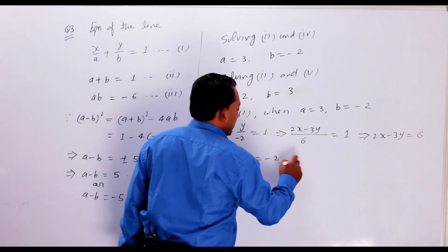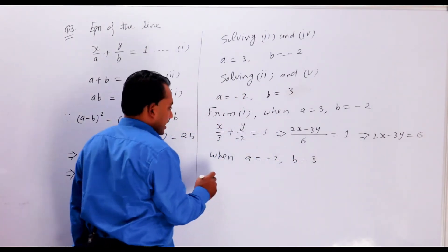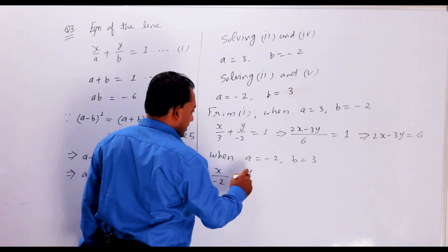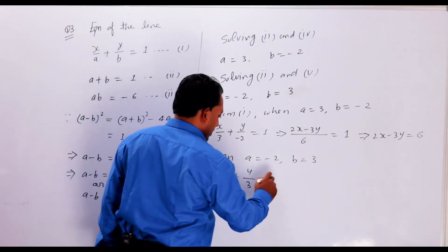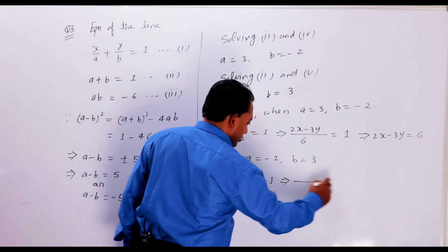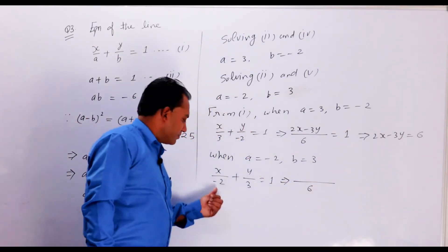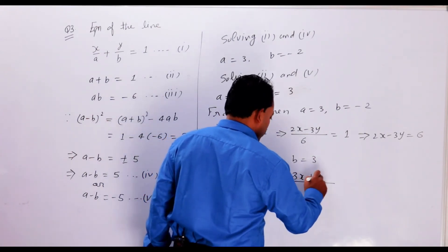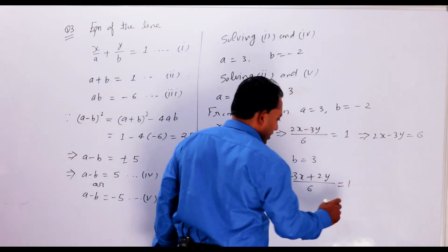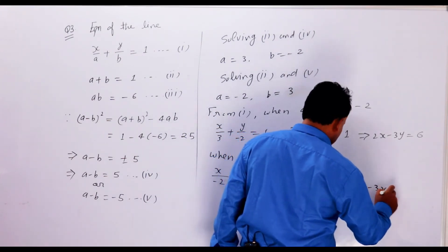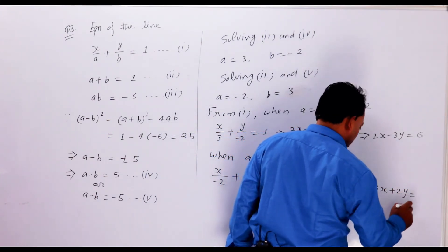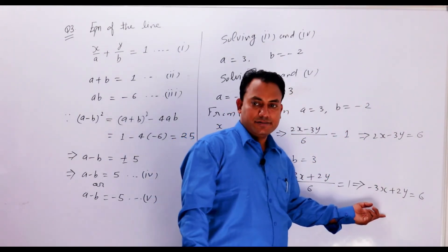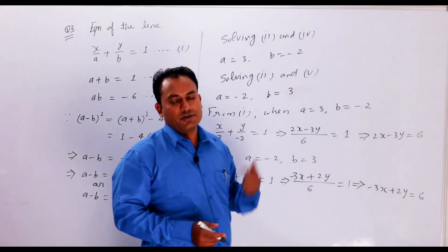When A is equal to minus 2 and B is equal to 3, we get x upon minus 2 plus y upon 3 is equal to 1. Taking LCM as 6, this becomes minus 3x plus 2y is equal to 6. So these are both the required equations.